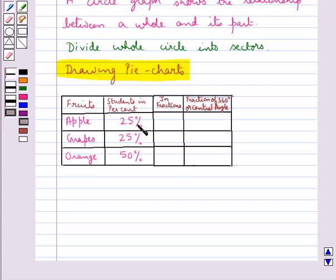We can express this percentage in fractions as 25 upon 100, which equals 1 upon 4. For grapes also we have 25 upon 100, equal to 1 upon 4. For orange we have 50 upon 100, equal to 1 upon 2. The central angle is given by 1 upon 4 of 360 degrees, which equals 90 degrees.